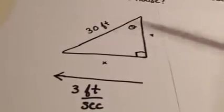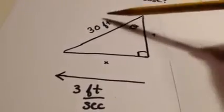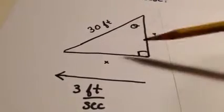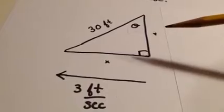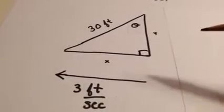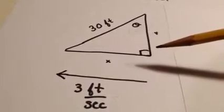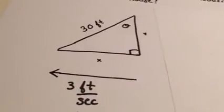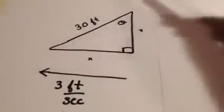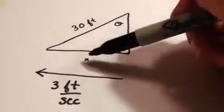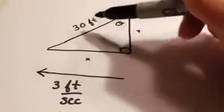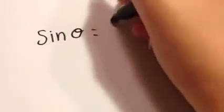Even though we have two values for this triangle and could find the third side, since it's constantly changing, that is only one triangle out of many, so we're not going to do that yet. First we're going to use sine theta, because we've got an angle, the opposite side, and a hypotenuse. So sine theta equals x over 30, 30 being the ladder.